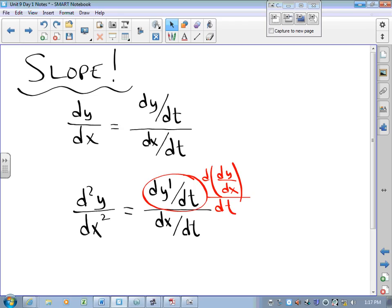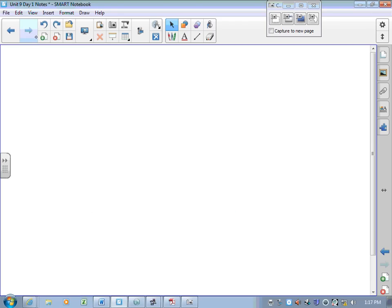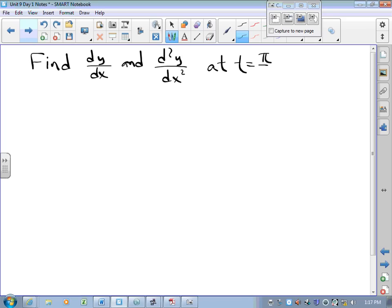Find dy/dx and the second derivative of y with respect to x at t equals pi over 3 for the curve where x is a half tan t and y is a half secant t. That should be fun.